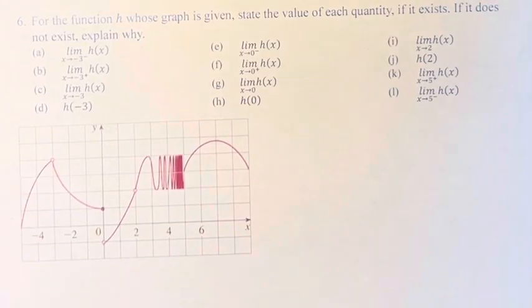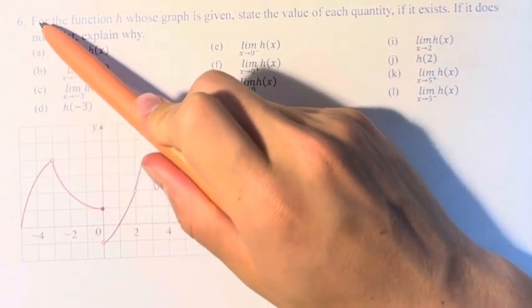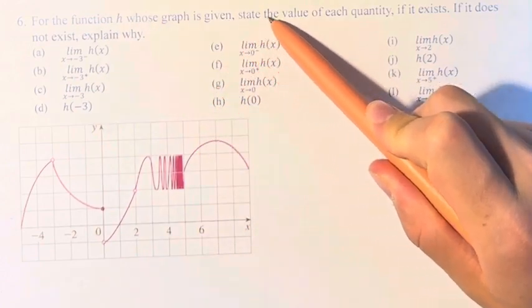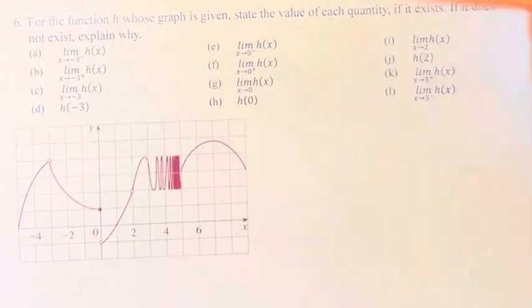Hello and welcome back to another video. In this problem, we're asked for the function h whose graph is given, state the value of each quantity if it exists. If it does not exist, explain why.